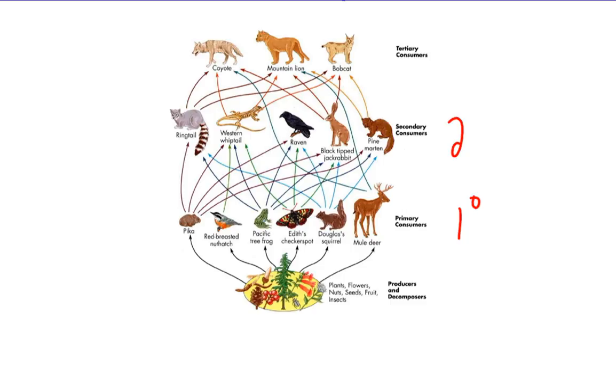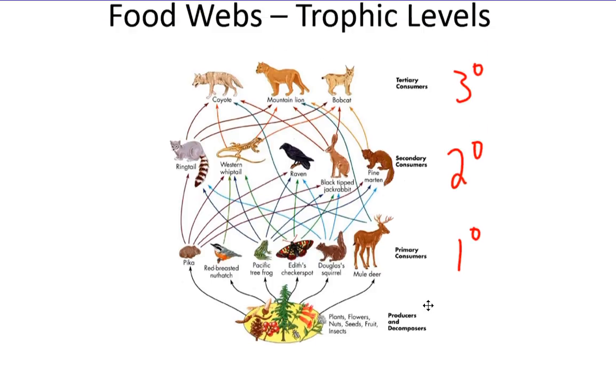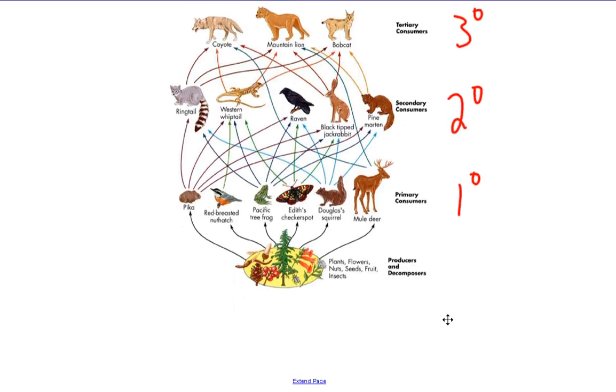Then you have secondary consumers. Secondary consumers eat the primary consumers. Then you have tertiary consumers, and the tertiary consumers eat the secondary consumers and probably some primary consumers as well.